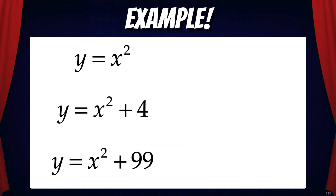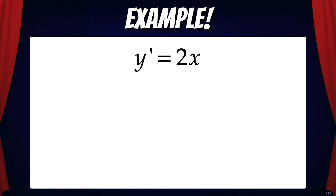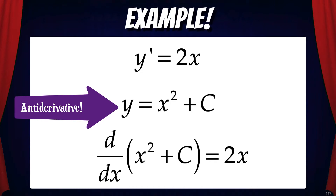Here's an example. Suppose we have the functions y = x², y = x² + 4, and y = x² + 99. Notice that the derivative of each of these functions is the same: y' = 2x. But now let's suppose we start with y' = 2x and we want to find y. y would equal x² + c, where c is any constant, because the derivative of x² + c equals 2x. That means x² + c is the antiderivative of 2x.